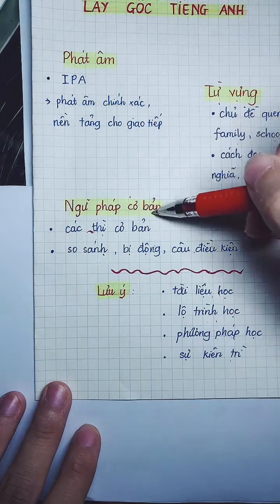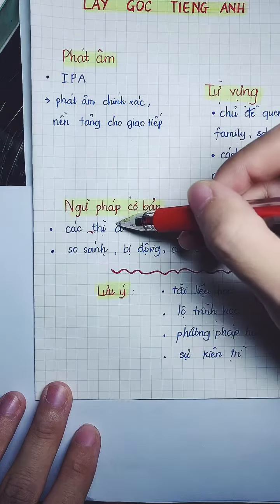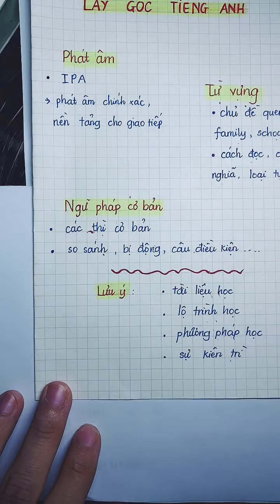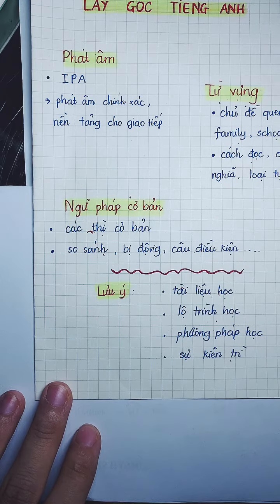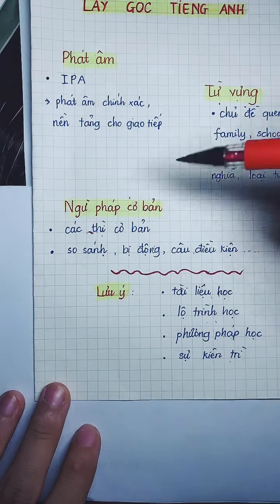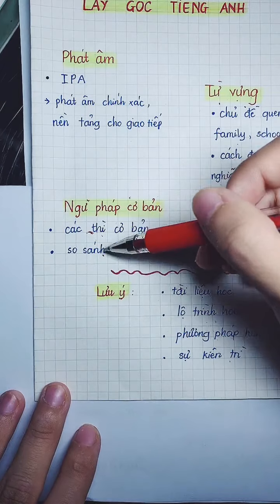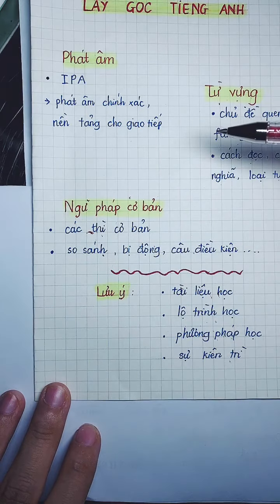Ngữ pháp cơ bản: đầu tiên phải học phần thì. Những bạn mất gốc không biết học cái gì thì cứ vào phần thì: hiện tại đơn, hiện tại tiếp diễn, quá khứ đơn, quá khứ tiếp diễn, tương lai đơn. Đó là 6 cái cơ bản. Sau đó học tương lai tiếp diễn, hiện tại hoàn thành. Rồi mới học bị động, điều kiện, so sánh, loại từ.